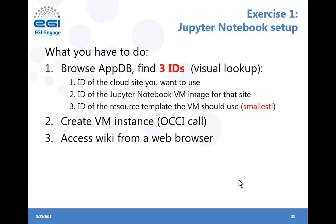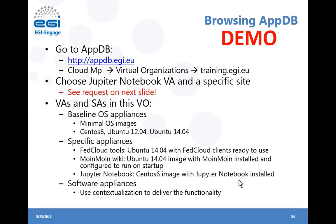Go to the AppDB with your browser and select Cloud Marketplace at the top, then select the virtual organization training.egi.eu. After that, choose the Jupyter Notebook virtual appliance and a specified site. When you go to the training.egi.eu view, you can see a list of different virtual appliances and software appliances available, mainly baseline OS appliances — an image with only the OS installed, plus specific configuration to properly run in a cloud environment.